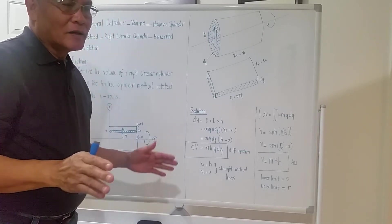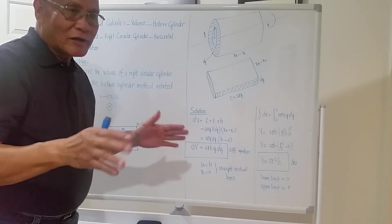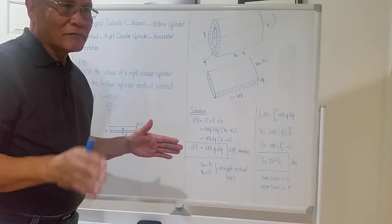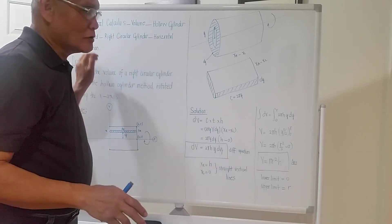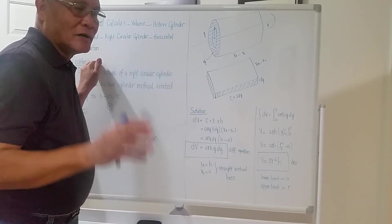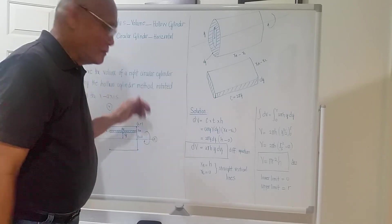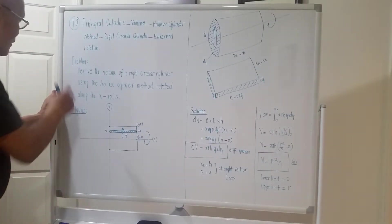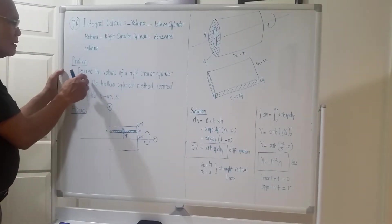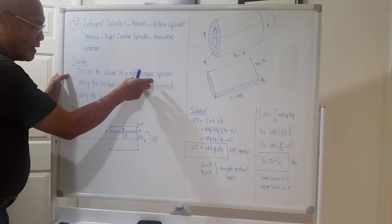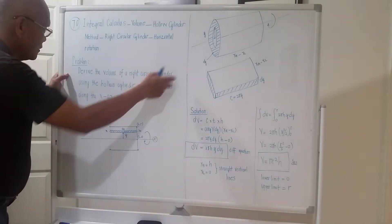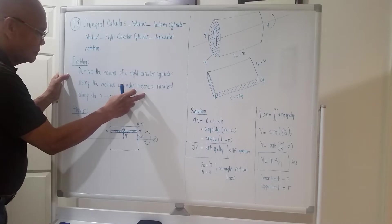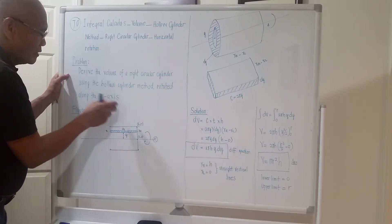We will try to bring out the derived formula using a horizontal rotation. The result should be the same. Problem: derive the volume of a right circular cylinder using the hollow cylinder method rotated along the x-axis.